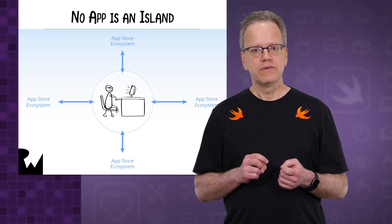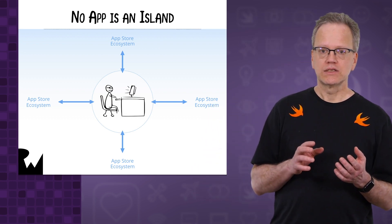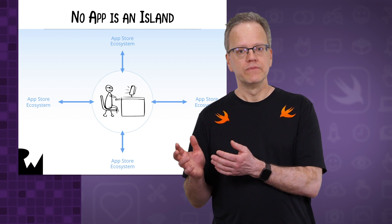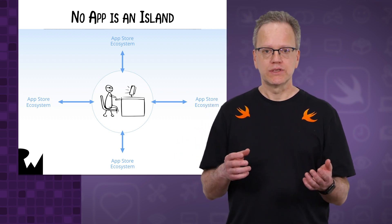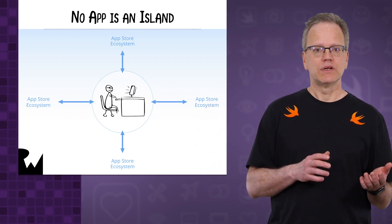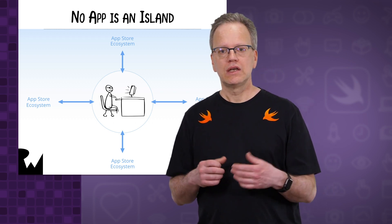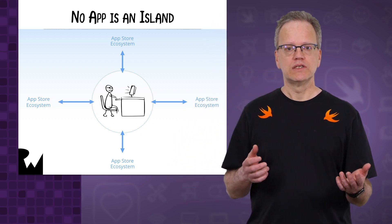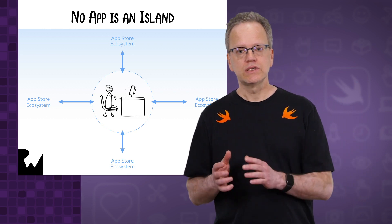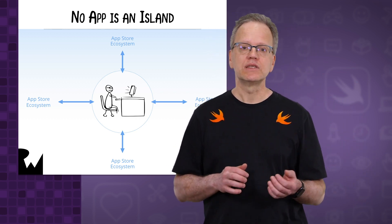We often do this explicitly, like when we distribute an app for beta testing with TestFlight or submit it to App Store Connect for sale. But we also do this implicitly, like every time we run an app and Xcode silently code signs it for us, and every time we run it on one of our iOS devices or in a simulator, where we rely on implicitly generated provisioning profiles to make this possible.